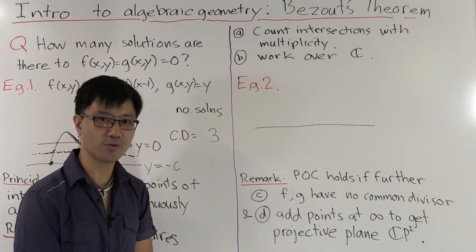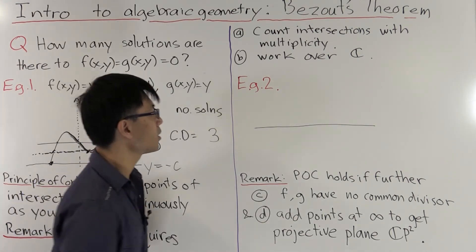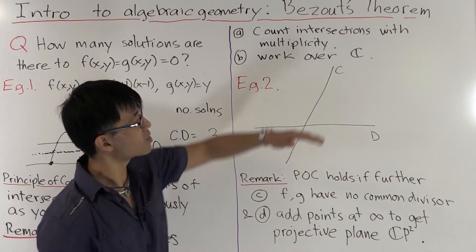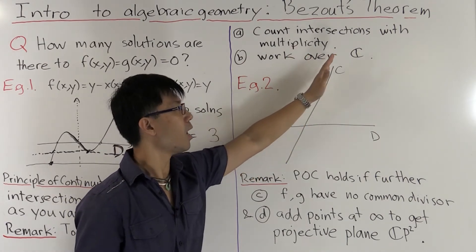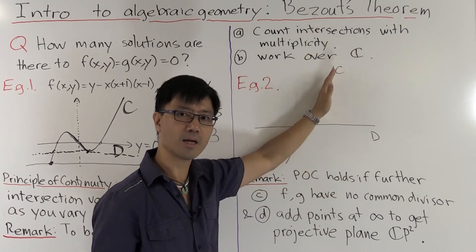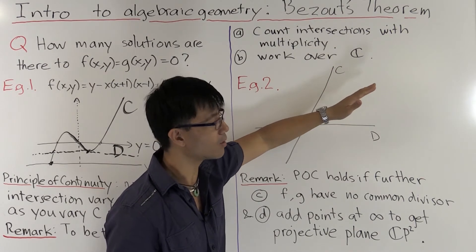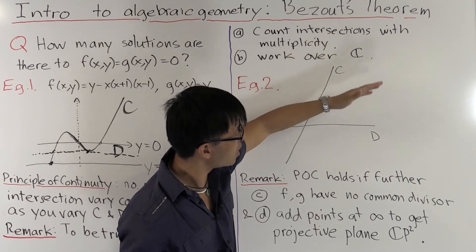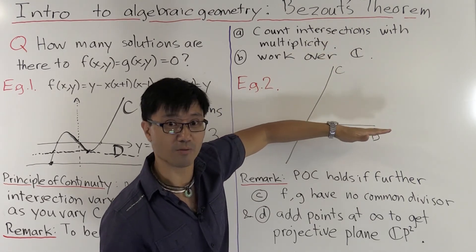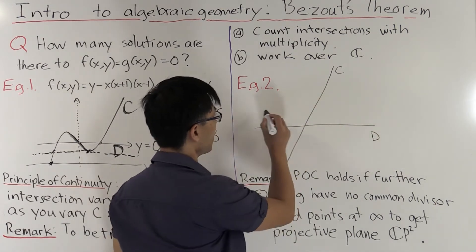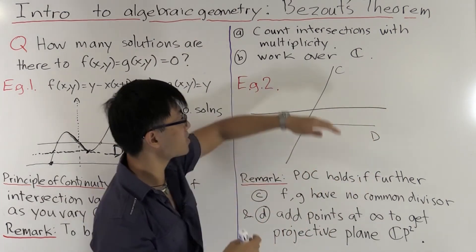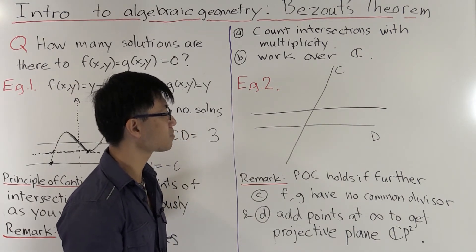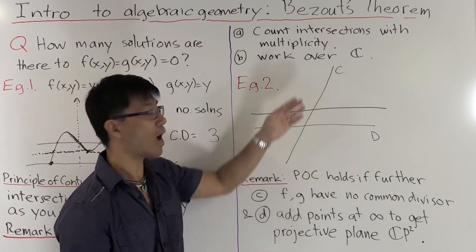Let's look at a slightly different example. Suppose we have two lines — they intersect in just one point. If we vary C by rotating it, the intersection stays at one point for a while. But if you rotate onto D itself, there's an infinite number of intersections. Or you can get a parallel line, in which case that point of intersection has disappeared. These show the principle of continuity won't hold unless we do something.